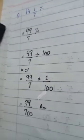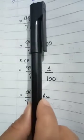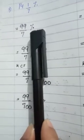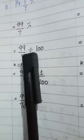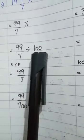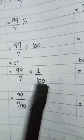The next question is 14 whole number 1 upon 7 percent. Again, convert the mixed number into an improper fraction. 14 into 7 is 98, plus 1 is 99. So we get 99 upon 7 percent. Percent means divided by 100, so we write 99 upon 7 divided by 100 upon 1. Using keep, change, and flip: keep 99 upon 7, change divide to multiply, and flip 100 upon 1 to get 1 upon 100. Multiply: 99 into 1 is 99, and 7 into 100 is 700. So the answer is 99 upon 700.